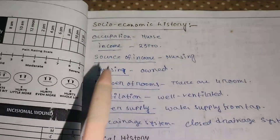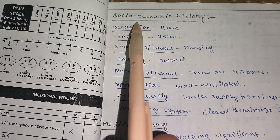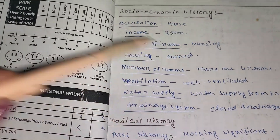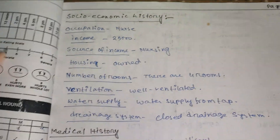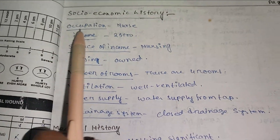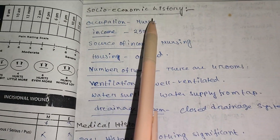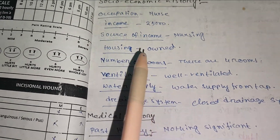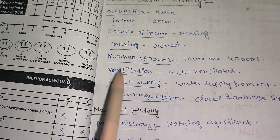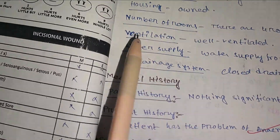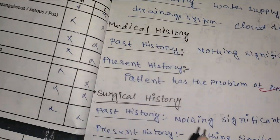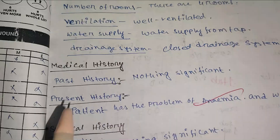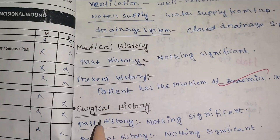After completing the personal and family history, we come to socioeconomic history: occupation, income, source of income, housing, number of rooms, ventilation, water supply, and drainage system. Then complete medical history — past medical history and present history — and surgical history should also be completed.